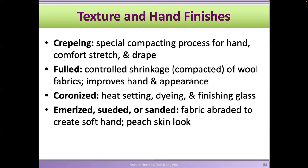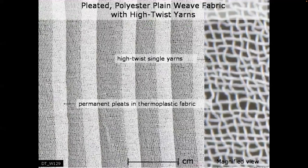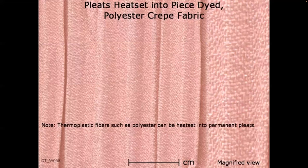Pleating is a basic finish. For thermoplastic fibers, you pleat the fabrics and heat set them in that pleated state and they stay that way permanently — unless you raise the temperature to the glass transition temperature. These are pleated polyester fabrics.